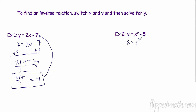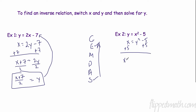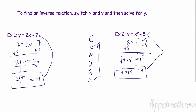Let's try a trickier one. After swapping, we get X equals Y squared minus 5. When solving, work backwards through the operations. Undo subtraction first: add 5 to both sides, giving X plus 5 equals Y squared. The opposite of squaring is taking the square root, and since this is an even exponent, we must include plus or minus: plus or minus the square root of (X plus 5) equals Y. This inverse is made up of two parts.